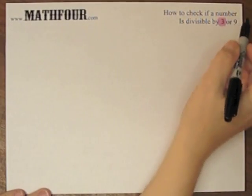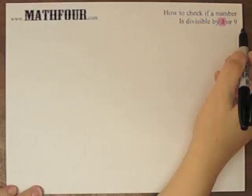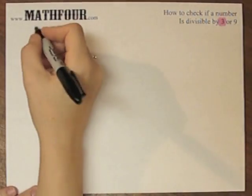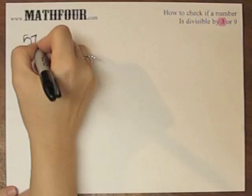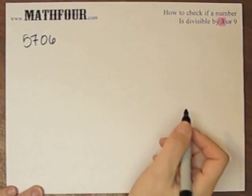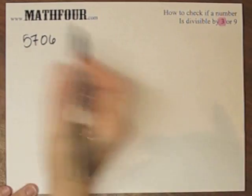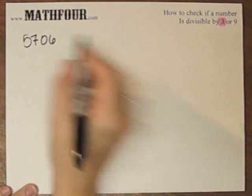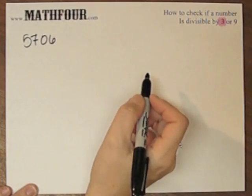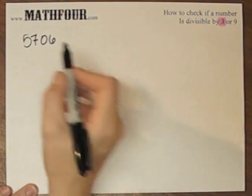I'm talking about how to check to see if a number is divisible by 3 or 9, and specifically we're talking about 3 right now. We're going to look at the number 5706 that I previously know from what I did as my pre-work that this is divisible by 3, but I'm going to show you how you can actually tell if it's divisible by 3.